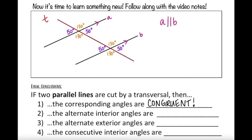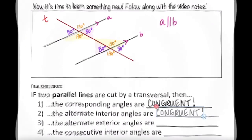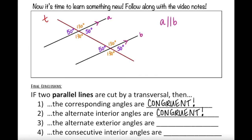What conclusion can we make about alternate interior angles? Alternate means opposite sides of the transversal, and interior means inside the parallel lines — inside the river. One pair of alternate interior angles is this 50-degree angle and this 50-degree angle. The other pair is this 130-degree angle with this 130-degree angle. If two parallel lines are cut by a transversal, the alternate interior angles are congruent.